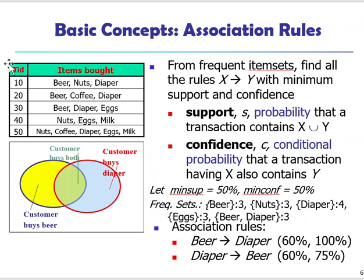Using this little transaction database as an example, we have five records. If we set our minimum support to 50% and minimum confidence to 50%, then 50% of five records gives us an absolute support count of 2.5. Any item set that has an occurrence greater than 2.5 will be considered frequent. So beer, nuts, diaper, eggs, and the beer-diaper combination all have occurrence greater than 2.5 and are therefore considered frequent sets. From these frequent sets we can extract association rules.